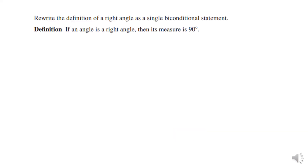Rewrite the definition of a right angle as a single biconditional statement. If an angle is a right angle, then its measure is 90 degrees — that's true. The converse: if an angle has a 90-degree measure, then it's a right angle — also true. So we can say: an angle is a right angle if and only if its measure is 90 degrees.